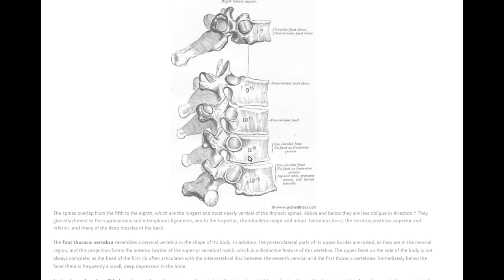Last two thoracic vertebrae that's T11 and T12 are quite similar. Both of them will articulate with the head of the rib only. So there is no facet on transverse process. T12 resembles the shape of a lumbar vertebra. Its articular processes are turned laterally and just like lumbar vertebrae they are convex from side to side.